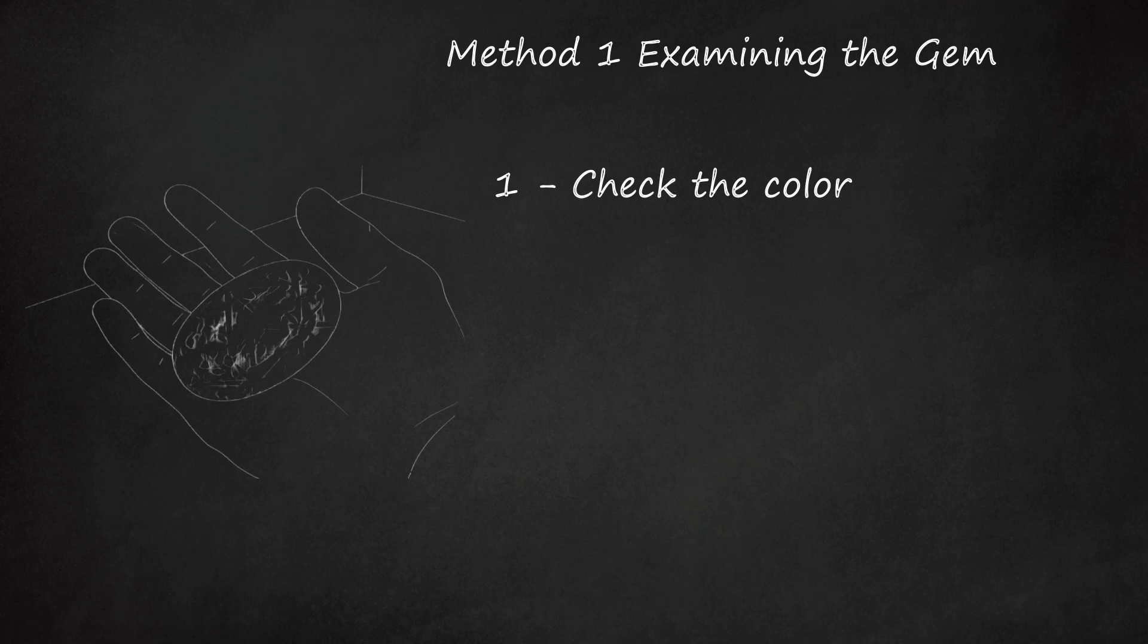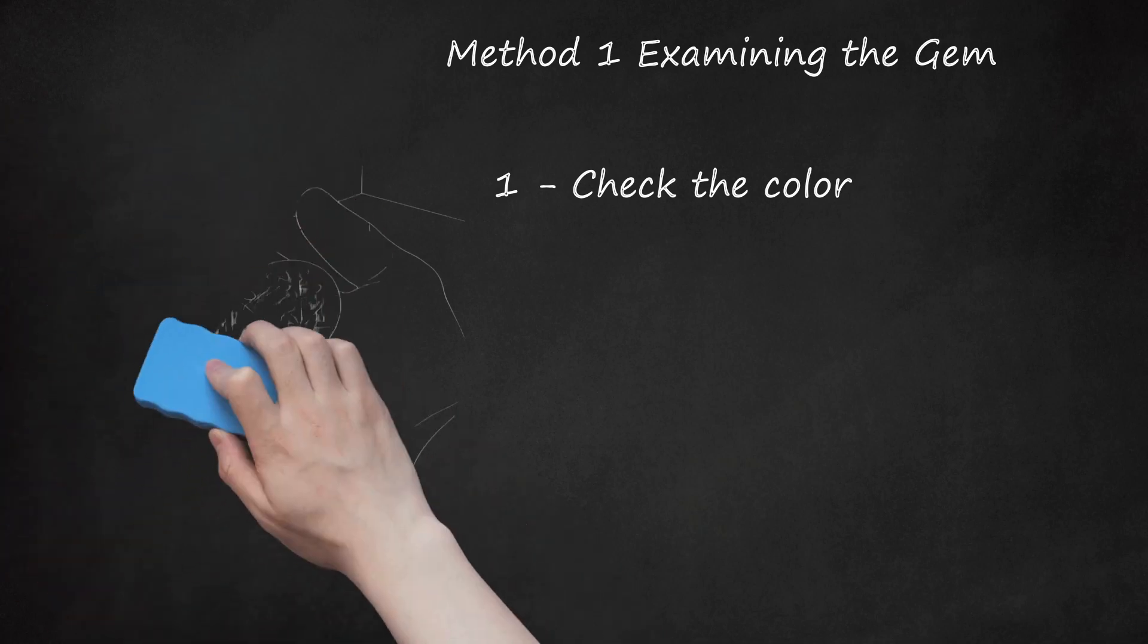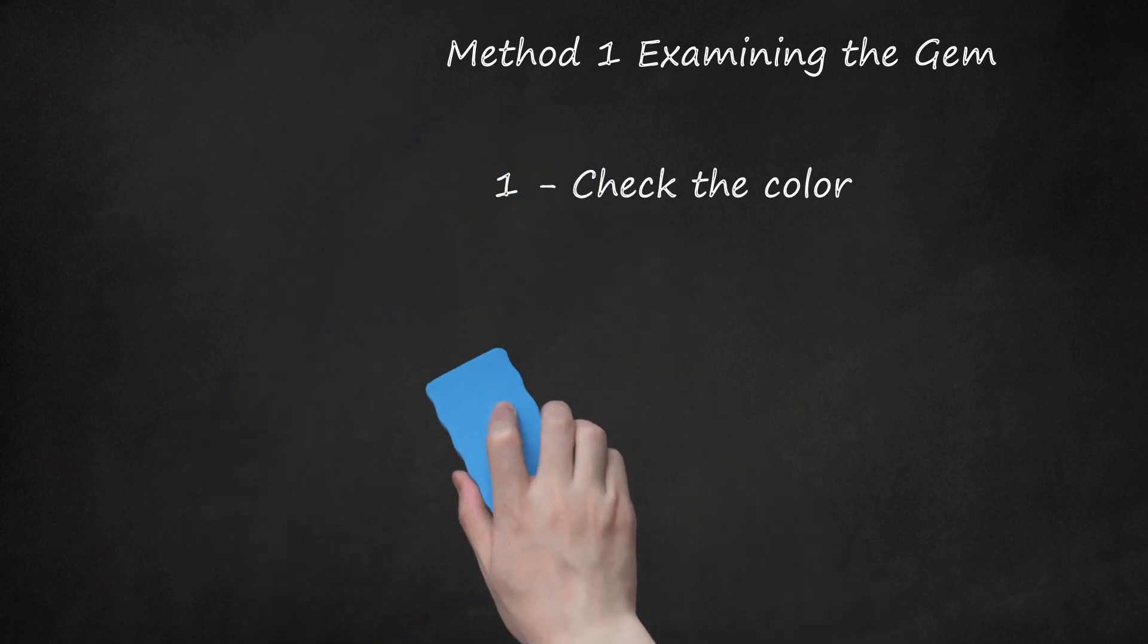Color zoning is the uneven distribution of color in a gemstone. This may occur in amethyst gems. Authentic amethyst may have some color zoning, which can lessen its value, that's typically visible when the gem is laid flat on a white surface.